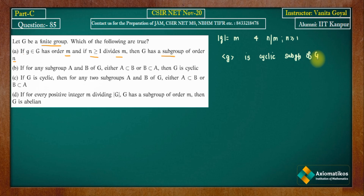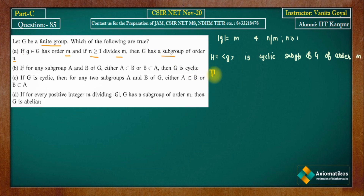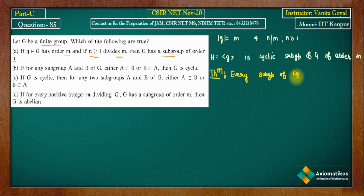The element g of order m generates a cyclic subgroup of G of order m. Let's denote this subgroup H. We then use the Fundamental Theorem of Cyclic Groups, which states that every subgroup of a cyclic group is cyclic — whether the cyclic group is finite or infinite.